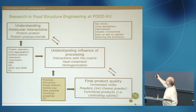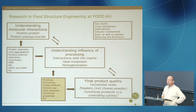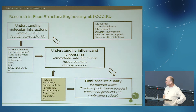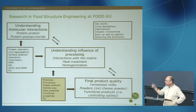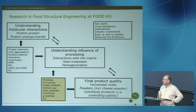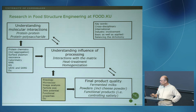But we need to interact with people who have other techniques available in order to get a full understanding - people who know much more than we do and have techniques to look into the molecular interactions. We also need to interact with people who know about the final food quality in other ways, for example the sensory group here within our department. Some key words are: cross-disciplinary, international, industry involvement, basic as well as applied, and balancing the dichotomy.